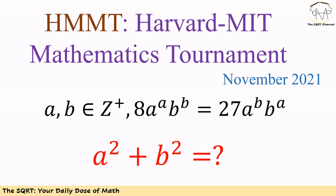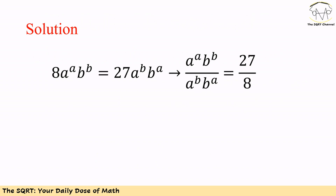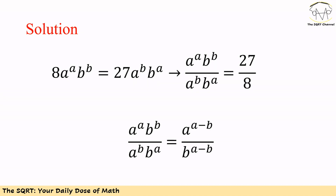Before moving to the solution, make sure that you pause to think about the problem. To solve this problem, we know 8·a^a·b^b = 27·a^b·b^a. If we simplify the equation, we can see that a^a·b^b divided by a^b·b^a equals 27/8. We also know this can be written as a^(a−b) over b^(a−b).